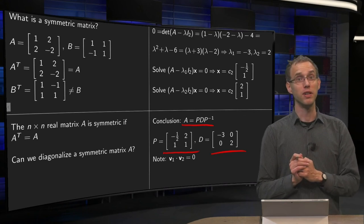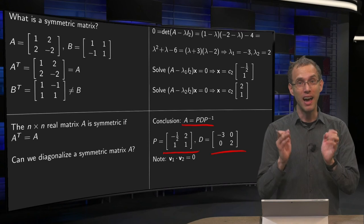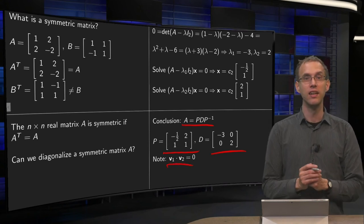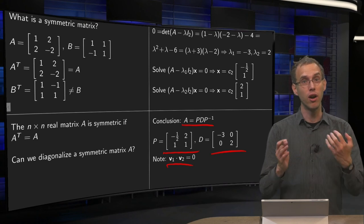And now you see something special happening, because if you look at the eigenvectors v1 and v2, the inner product is 0, so they are orthogonal.